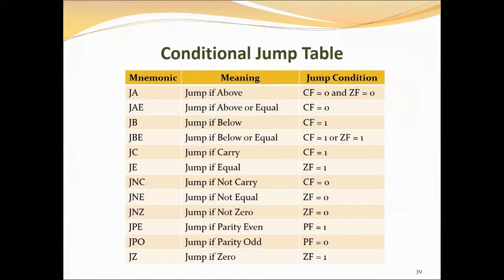Next is JBE (jump if below or equal), that is when CF and ZF are both equal to 1. JNA (jump if not above) applies the same condition. These terms are used when considering the magnitude of two unsigned numbers. No flags are affected.